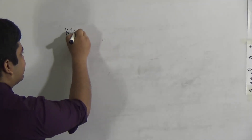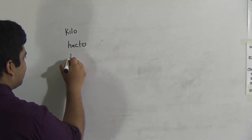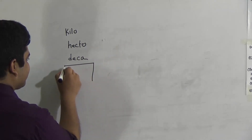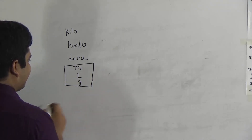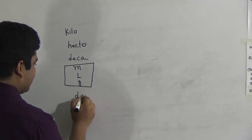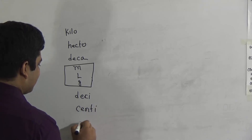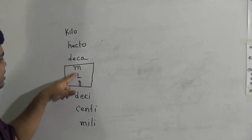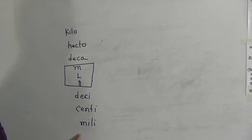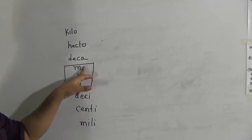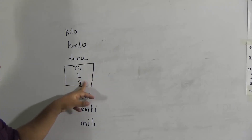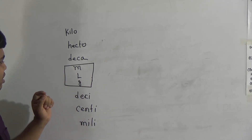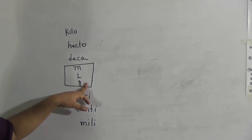The name of this chapter is Measurement. In order to solve this problem, this chart is very necessary for you to learn. The chart is: Kilo, Hecto, Deka — Meter, Liter, Gram — Deci, Centi, Milli. For measurement of distance we use meter, for measurement of liquid we use liter, and for measurement of weight we use gram.